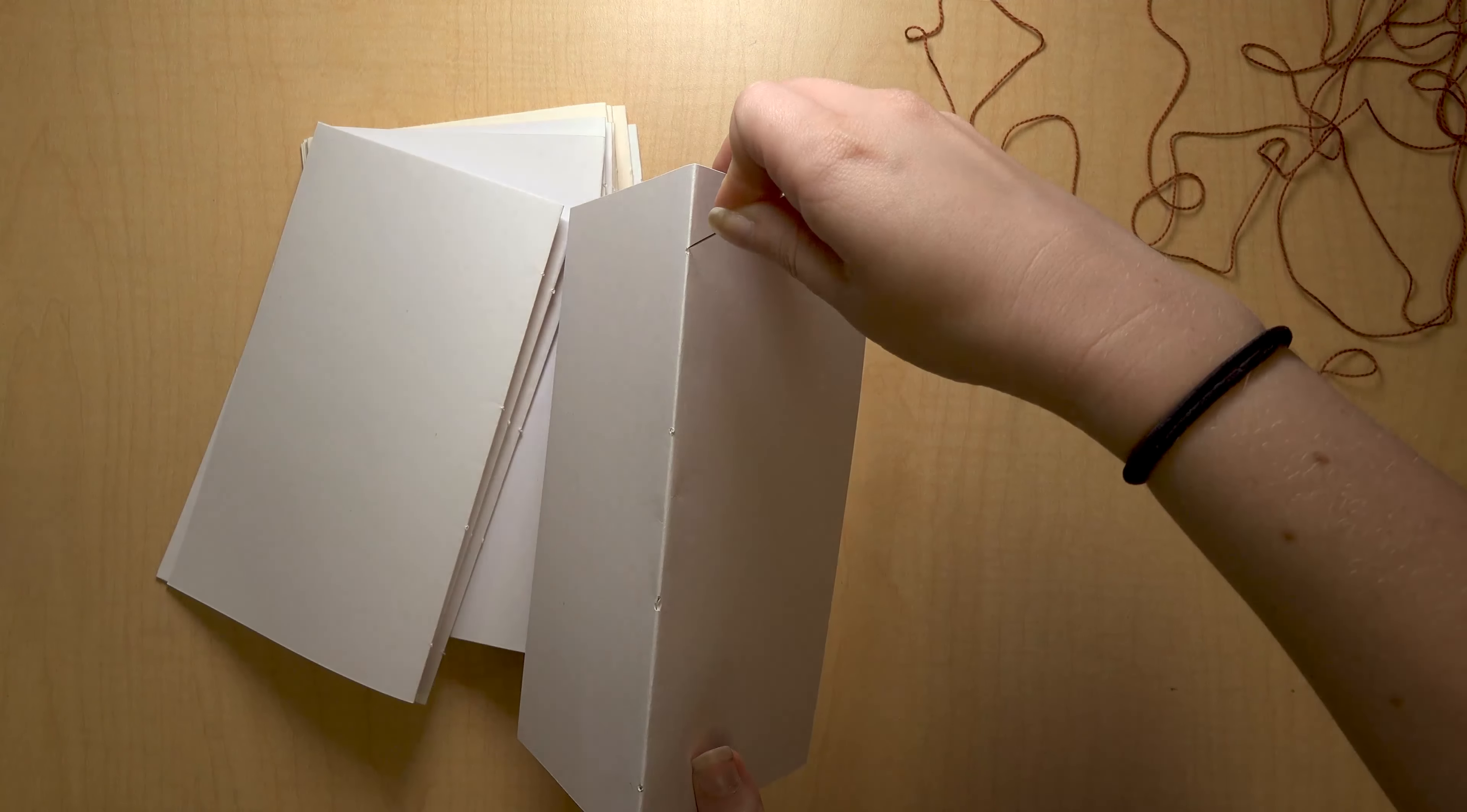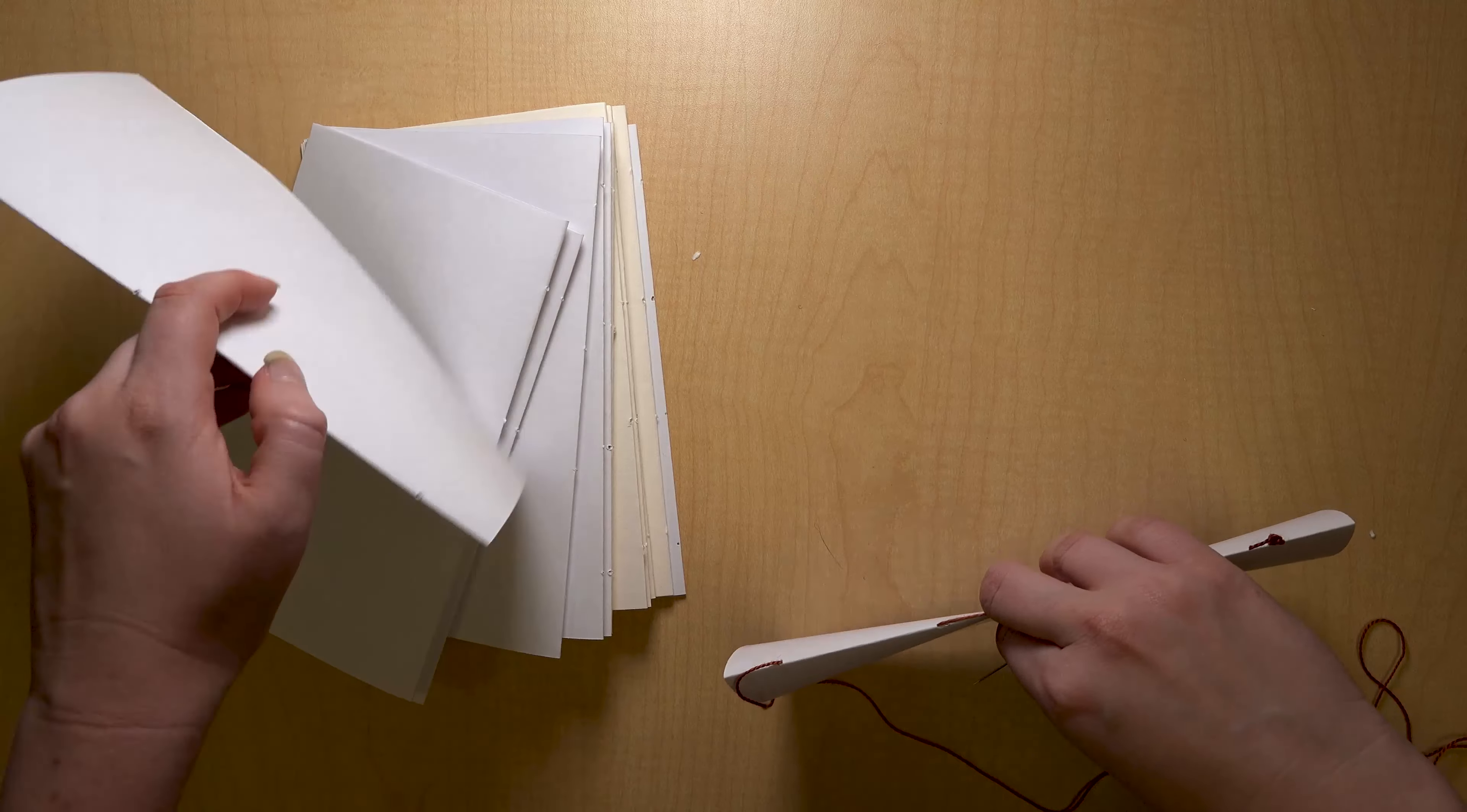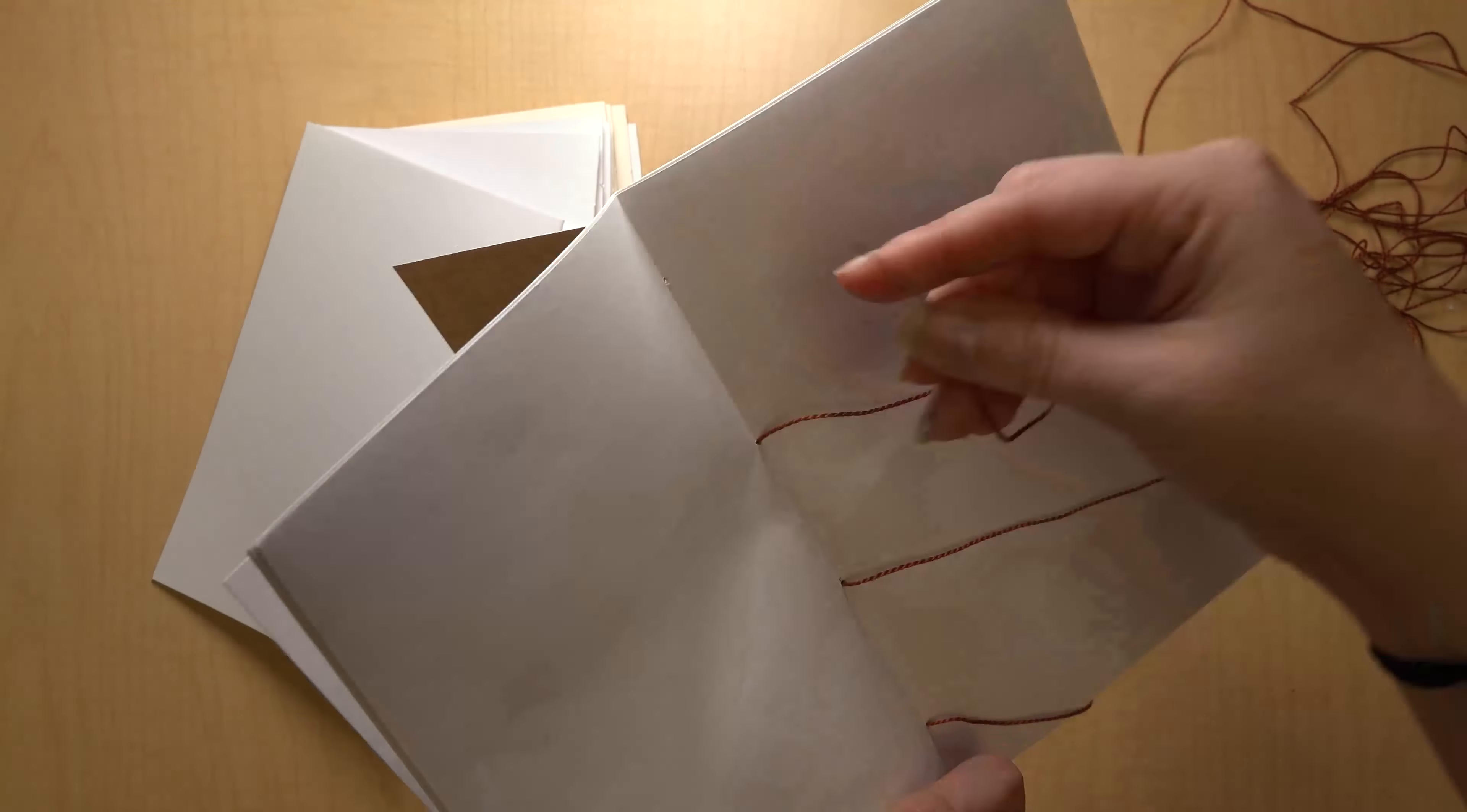Thread your needle. Start on the outside of the end paper at the bottom of the stack and push in. Pull it out at the next mark. Push it in through the third and out through the fourth. Hold the first signature and line it up with the end paper. Thread the needle through the nearest mark on your signature. Pull it back out through the second mark. Now thread it back in through this mark on your end paper. Pull it through this one, and then back up and into the signature again.